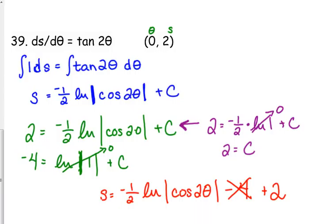You should always check it. When you get right here, plug your theta back in and make sure that you get s. I plugged in 0 right here. 2 times 0 is 0. The cosine of 0 is 1. Natural log of 1 is 0. So all this is 0. So this should be my s. If I had it otherwise, I would be saying that when theta is 0, s is negative 4, and s is supposed to be positive 2.